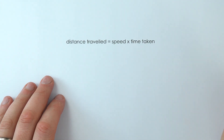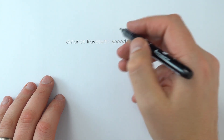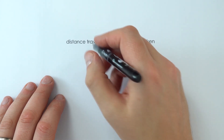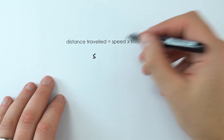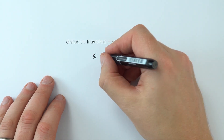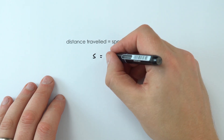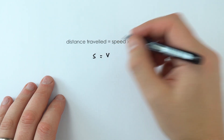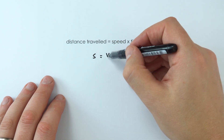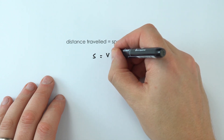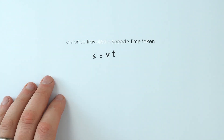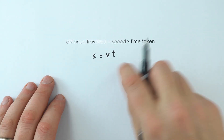Confusingly, we don't really use 'd' for distance — we use 's' for distance, and also 's' for displacement. Speed isn't an 's' but speed is a 'v', and we also use 'v' for velocity. Then we multiply that by the time taken, which is 't'.